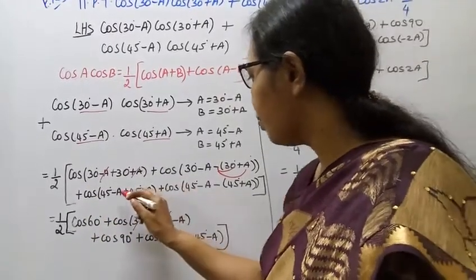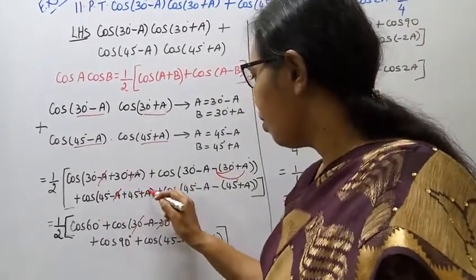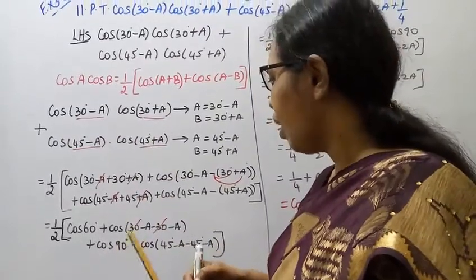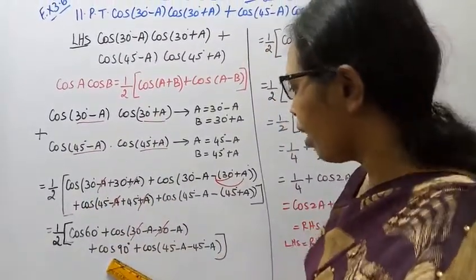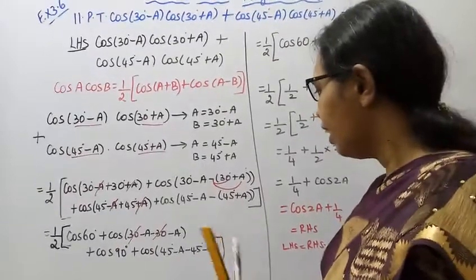This cancels minus A, plus A cancels, cos 90, cos 90 degree. This is cos.